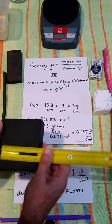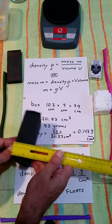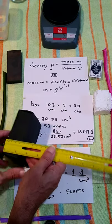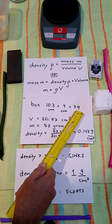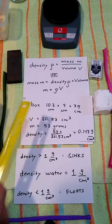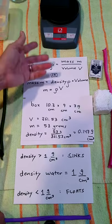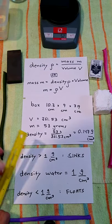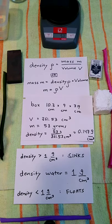A width of about 9 centimeters and a height of about 3.9 centimeters. The volume of the box is the length times the width times the height. If I multiply those out I get a total volume of 361.53 cubic centimeters. The mass is 53 grams.